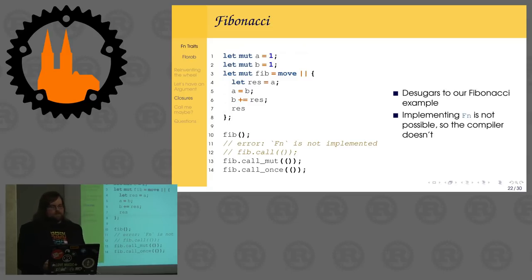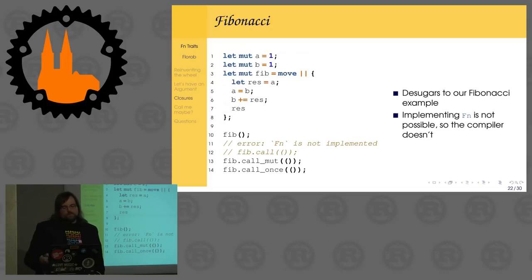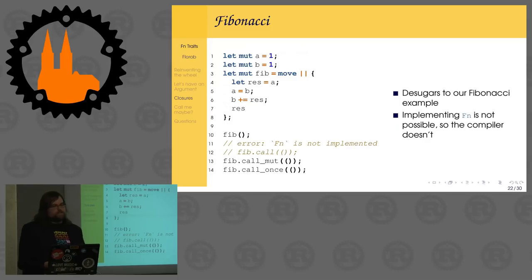Next example: let's try to do our Fibonacci closure. Same thing — we have two variables, first declaring them, and then creating a move closure. Both variables, since we're using them inside the closure, will be moved into it. And then we can mutate them inside the closure. It's basically the same code as before, actually looking a bit simpler. When calling it, it will always return the next element of the Fibonacci sequence. The difference is that if you try to call fib.call with an immutable shared reference, the compiler will tell you Fn is not implemented for that closure. The compiler looks at the way the closure uses its captures and only implements those traits that are actually applicable. Since we are mutating our captures, the Fn trait cannot be implemented — we need at least a mutable borrow. FnMut and FnOnce are still there.